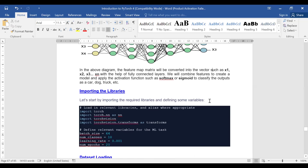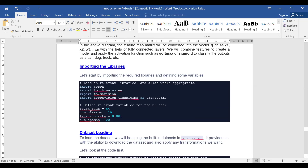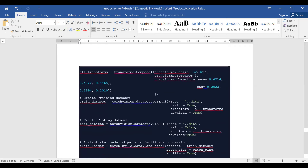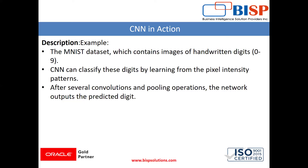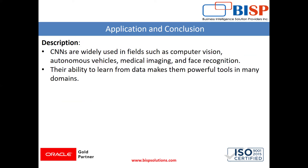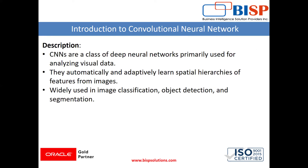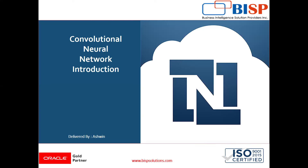In our next video, we will see what libraries we are going to import while working with a CNN network. We will also see CNN in action and how the pooling network works. CNN is widely used in applications such as computer vision, and it is primarily used for image detection and analysis.